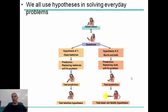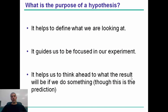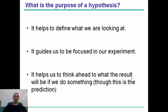Here's an example using batteries. If a flashlight is dead, you can test different predictions about what's causing it — is it the batteries or is it the light bulb? You can do some tests to figure that out. Hypotheses help to define what we're looking at, guide us to be focused in our experiment, and help us think ahead about what we're expecting to get. That's why it's kind of like an educated guess or statement about what we think is going to happen.